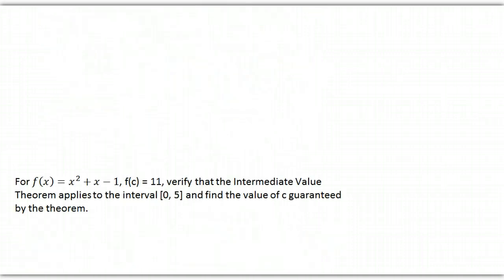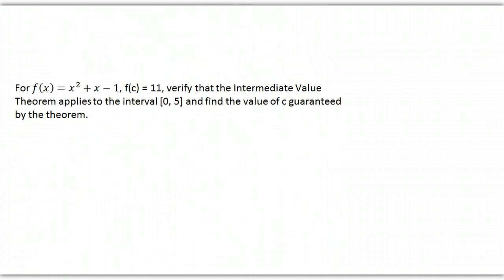So, how do we apply this? Well, here's a function, x squared plus x minus 1, and we're told that f of c is 11, so we need to verify the intermediate value theorem applies to the interval 0 to 5, and we're going to find the value of c guaranteed by the theorem. Well, is this continuous? Yes, it's a polynomial, so it has to be continuous.